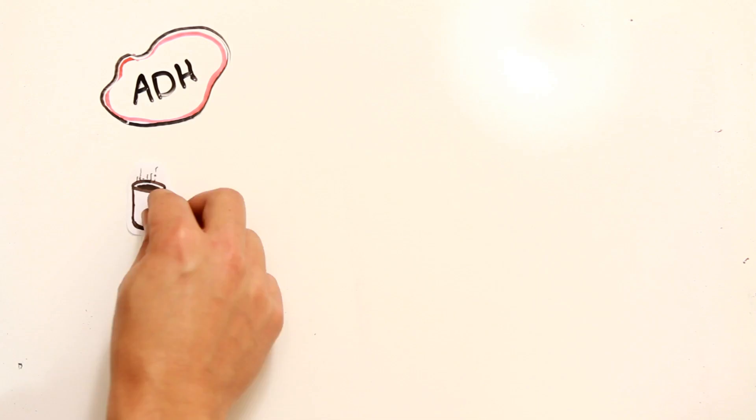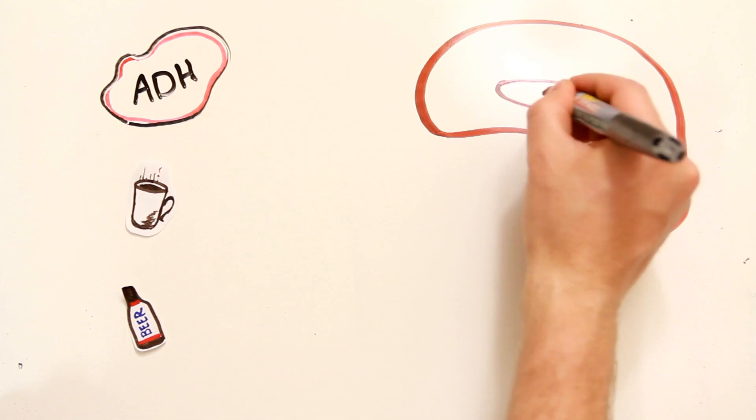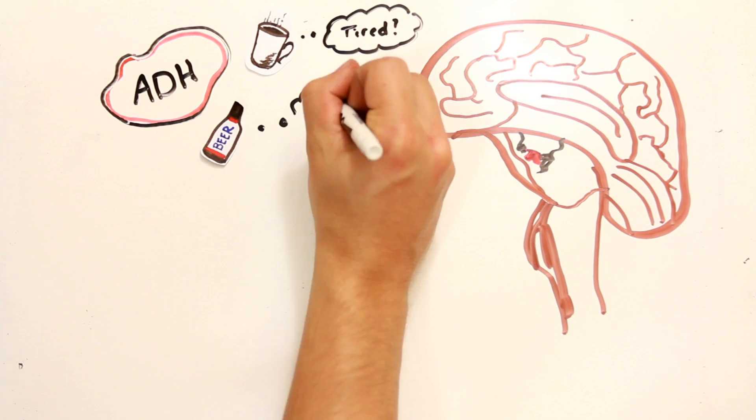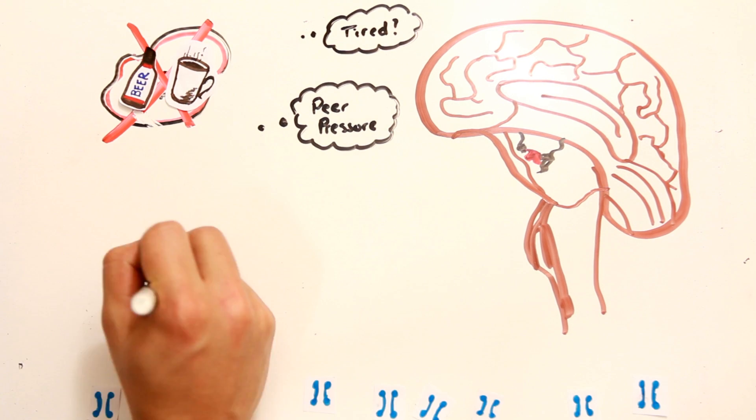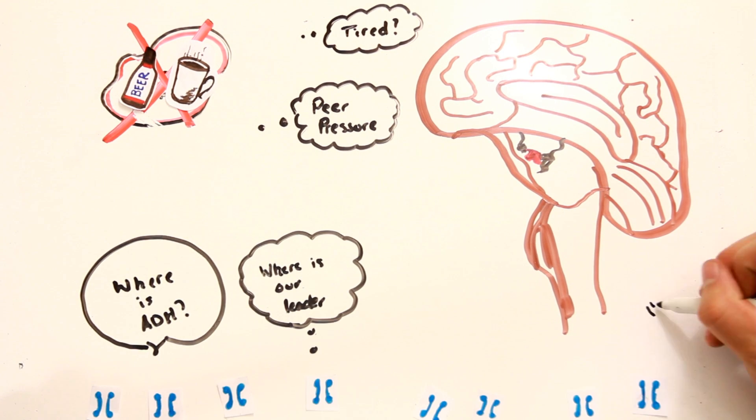So what does ADH have to do with caffeine or alcohol? Well, both caffeine and alcohol inhibit the release of ADH by the pituitary gland, and as a result, the aquaporins are not created to reabsorb water, and the amount of water in your pee increases.